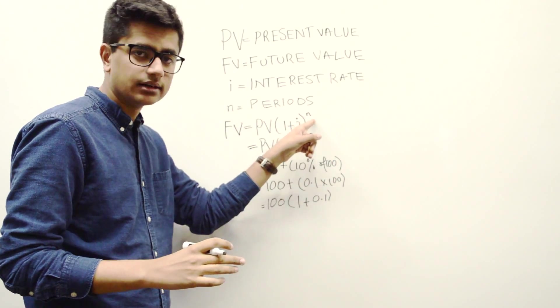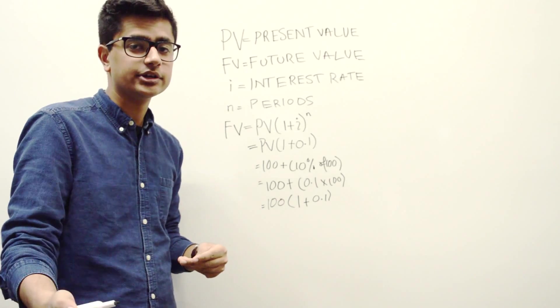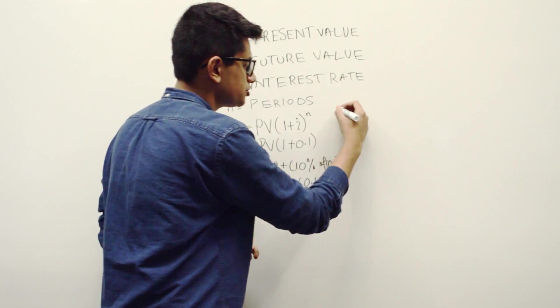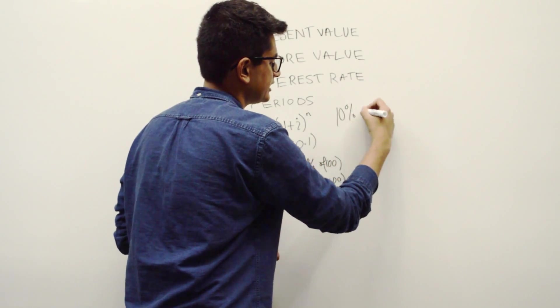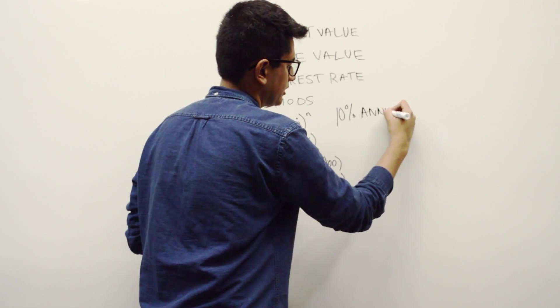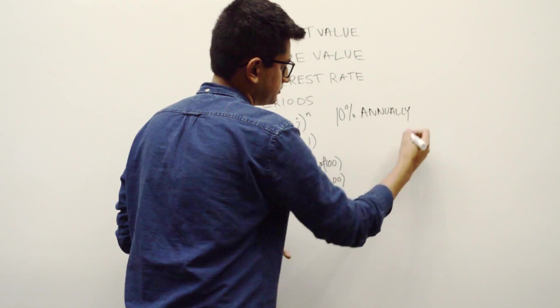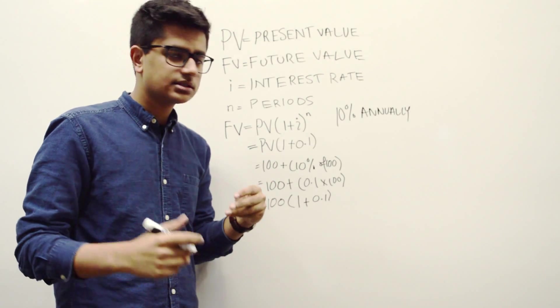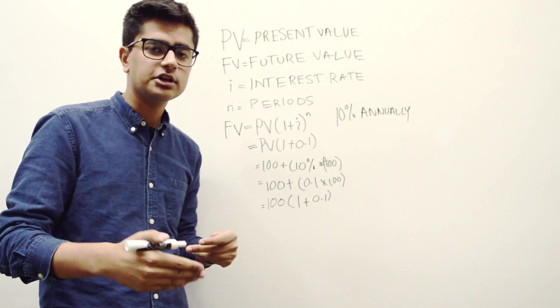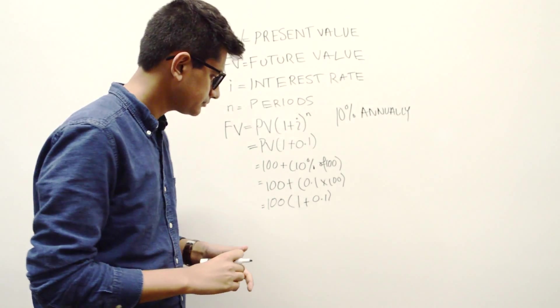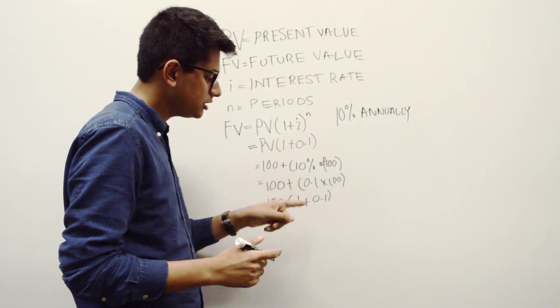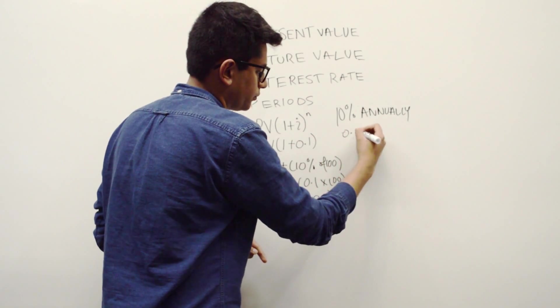And the last part of the equation is N, which is basically the number of periods. Remember that I said that the interest rate that we were talking about is 10% annually. What that basically means is, like I explained before, your money is compounded at the end of every year. And 10% in the equation is written as 0.1.